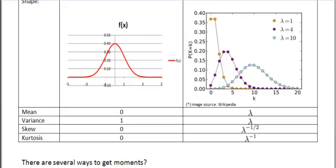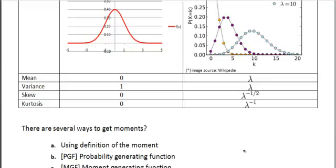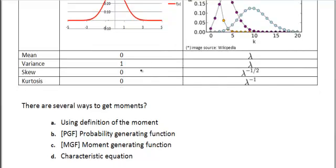But that's all fine and dandy. However, wouldn't it be nice if we could actually calculate these parameters ourselves? And there are four main ways through which we can achieve this. One is, we can use the definition of the moment, we can use probability generating function, we can use moment generating function, and finally, we can use the characteristic equation.